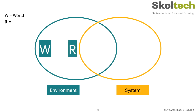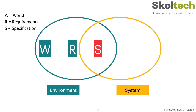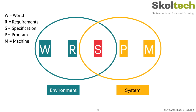In the WRSPM model: R represents requirements — the user's language and understanding of what the user wants. S for Specifications provides just enough information for a software engineer to build a system that satisfies the requirements, expressed in natural language. P for Program implements the specification using a programming language. M for Machine refers to the hardware or system with its constraints.